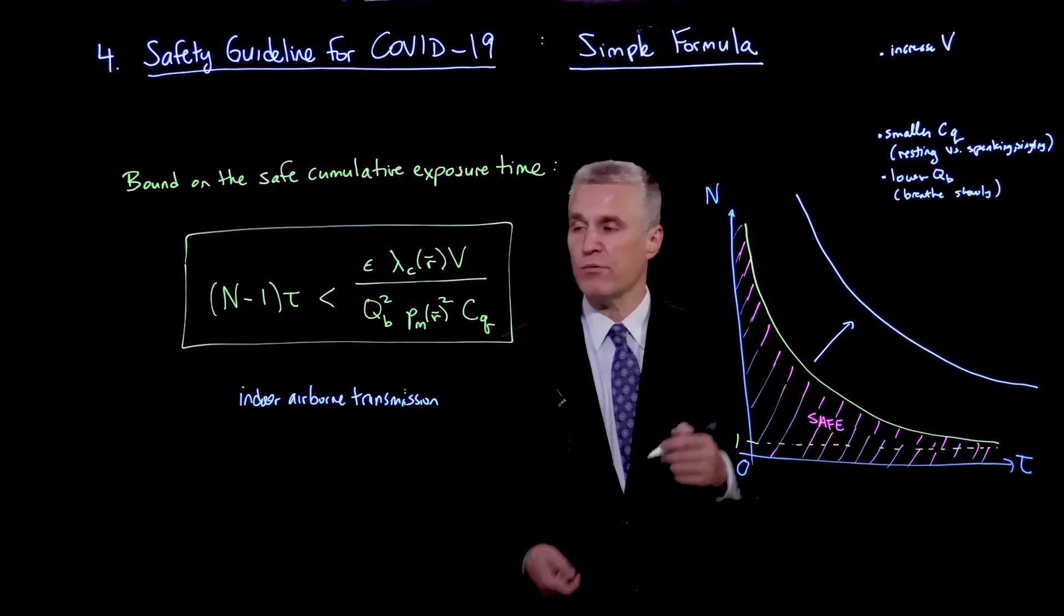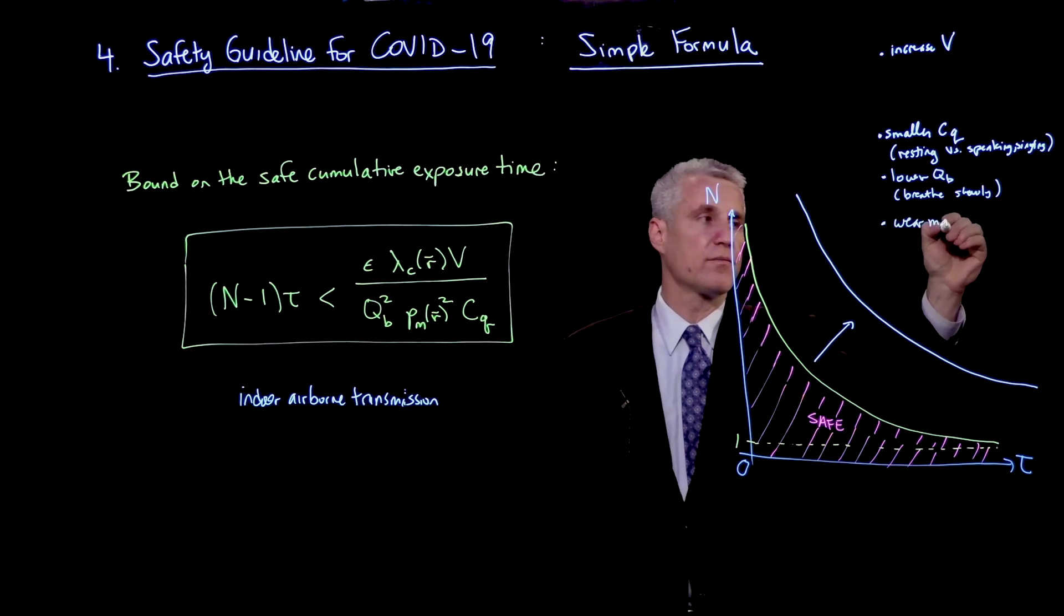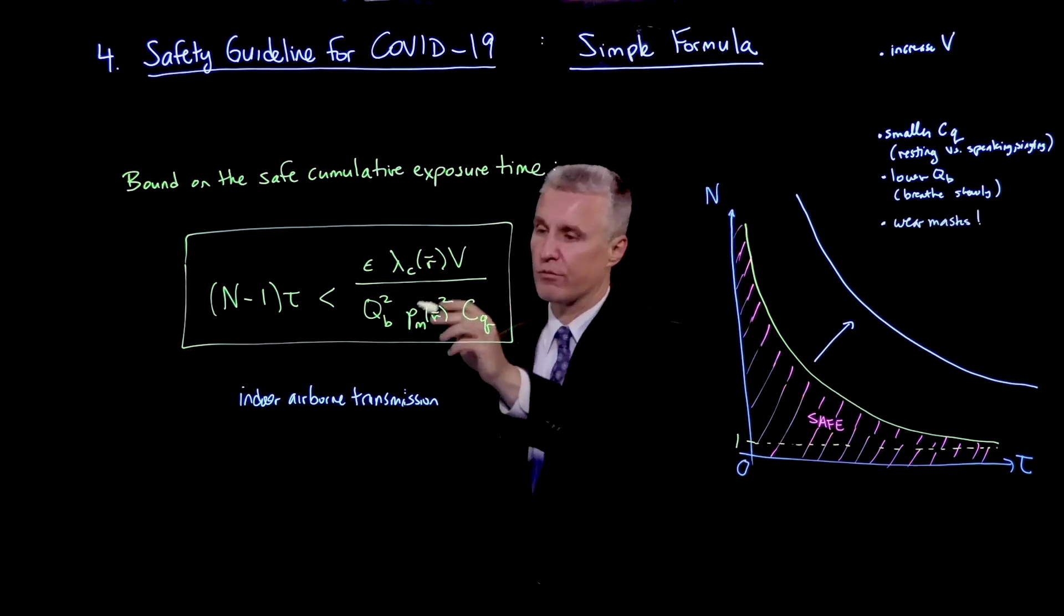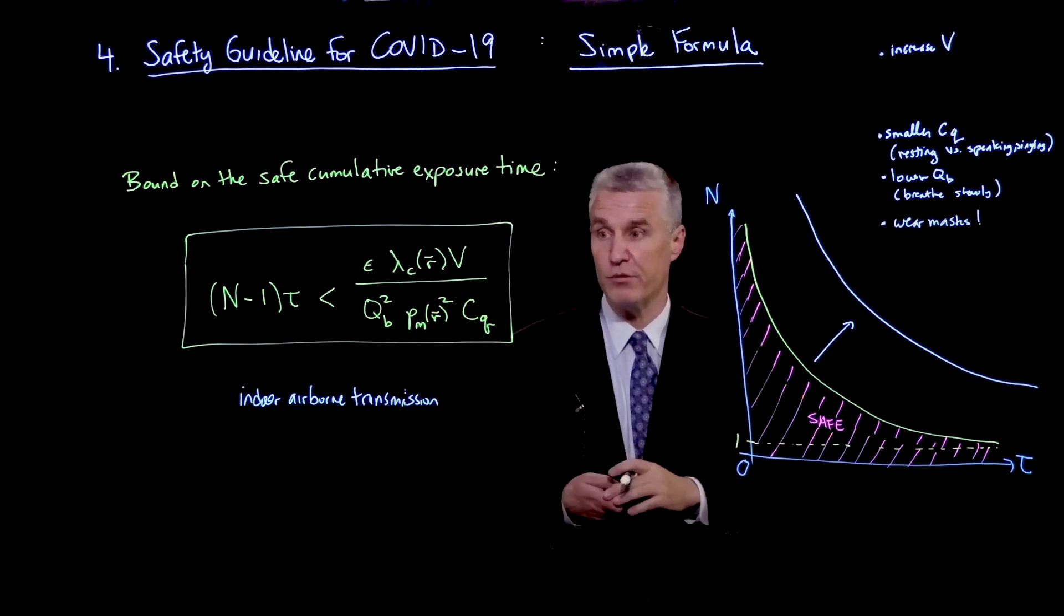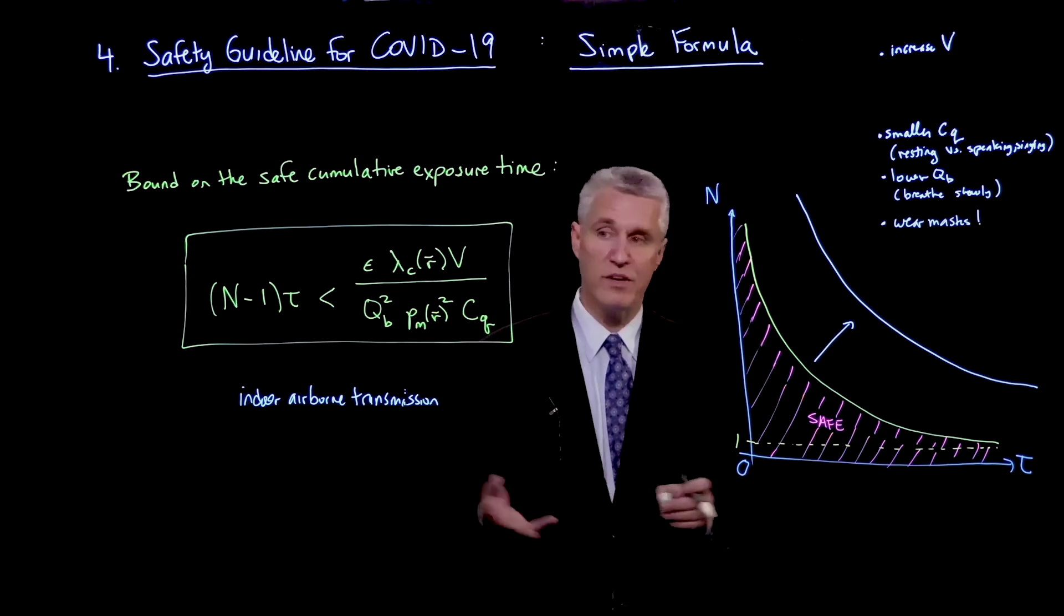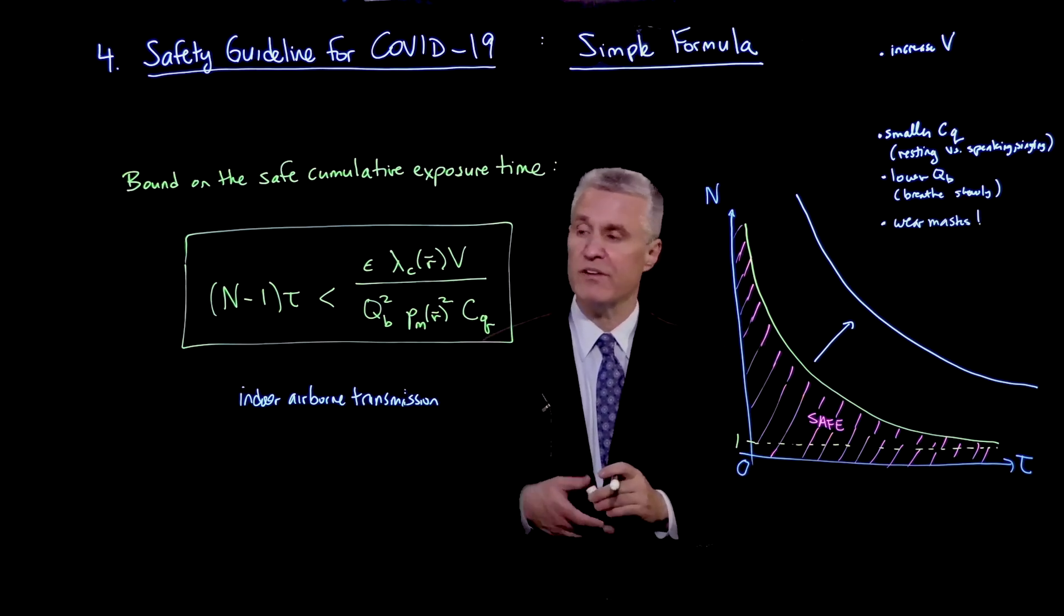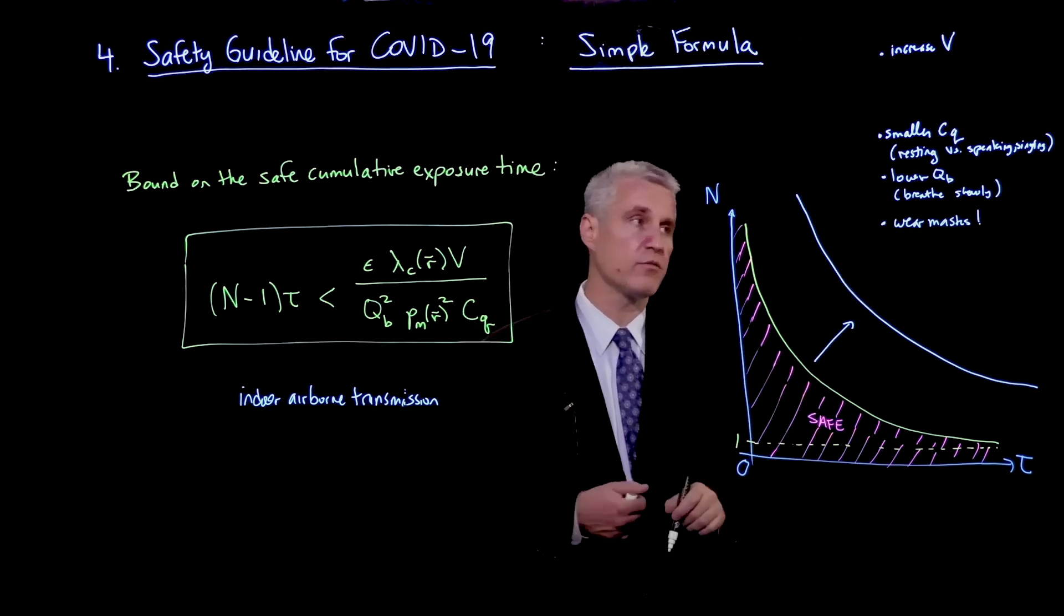And what else do we have? We have masks. Well, obviously, we can wear masks, and that is actually very helpful, because as we've already discussed, it comes in squared, and that is something which is a very simple fix. And if the mask penetration factor is 10% or even possibly less, it comes in squared. So that can have a very big effect of pushing this over, as we will see.